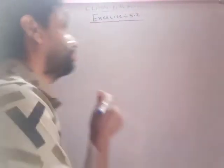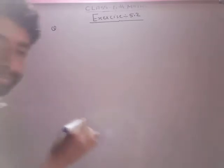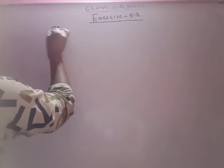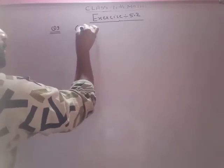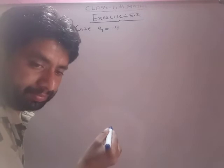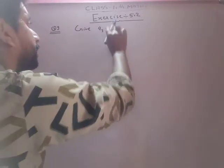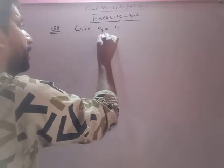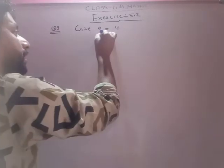Question 9: If the 3rd and 9th terms of an AP are 4 and minus 8 respectively, which term of the AP is 0? Given: the 3rd term of AP, A3, equals 4, and A9 equals minus 8.